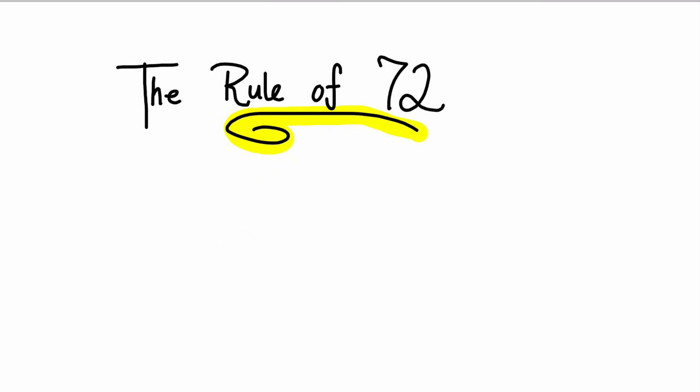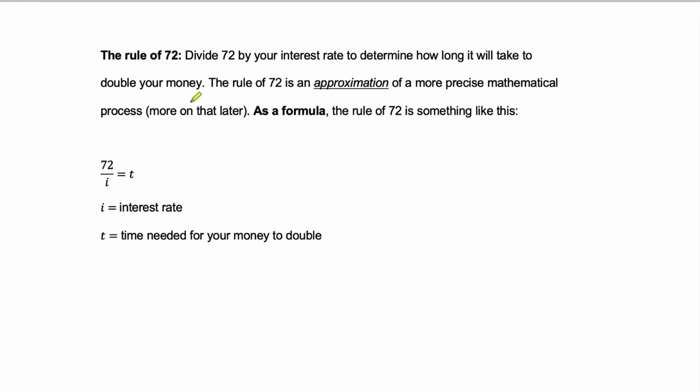And the way this rule works is that it gives you an approximation of the time it will take to double your money. To double it. So you invest some amount of money, they give you some interest rate, how long will it take before you've doubled the money you invested? Well, that's where this formula comes in.